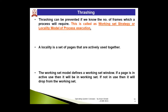Thrashing can be prevented if we know in advance the number of frames a process will require. Predictive knowledge — such as observing that similar past processes required 10 or 8 frames — can help prevent thrashing. This is called the working set strategy or locality model of process execution, meaning the number of required frames can be predicted in advance.